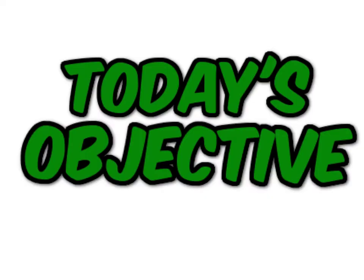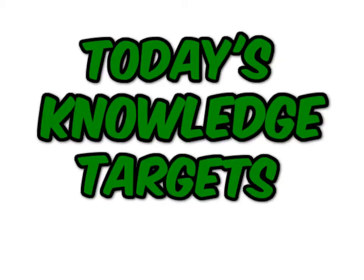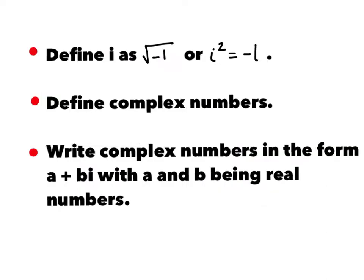Today's objective, same as the rest of the week: know there is a complex number i such that i squared is negative 1, and every complex number has the form a plus bi with a and b real numbers. Today's knowledge targets: know that i is the square root of negative 1, or i squared is negative 1. Define complex numbers and write complex numbers in the form a plus bi with a and b being real numbers.